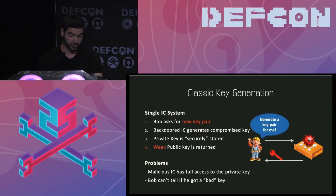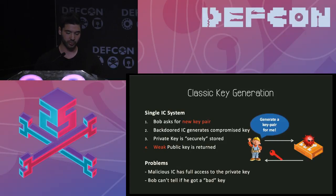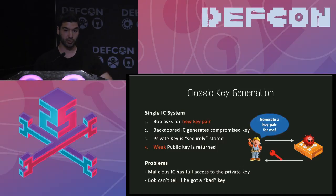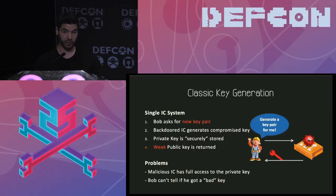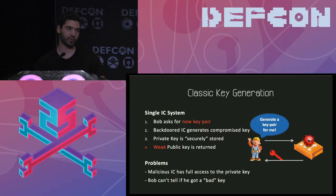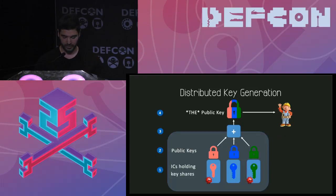In classic key generation, you go to the HSM and acquire a new private key. The HSM generates the key internally, stores the private key inside, and returns to you the public key. The problem is if the HSM has a malicious processor, that processor gains full access to the private key, and you have no idea if the returned public key is weak or has any other problem.